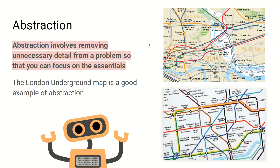The second strand of computational thinking is abstraction. Abstraction is the process of removing unnecessary details from a problem so that you can focus on the essentials. The London Underground map is a good example of abstraction. Here is an example of the map without abstraction being applied — you can see a lot of things on there, but it does make it quite hard to read and understand where the train lines or the underground lines are.